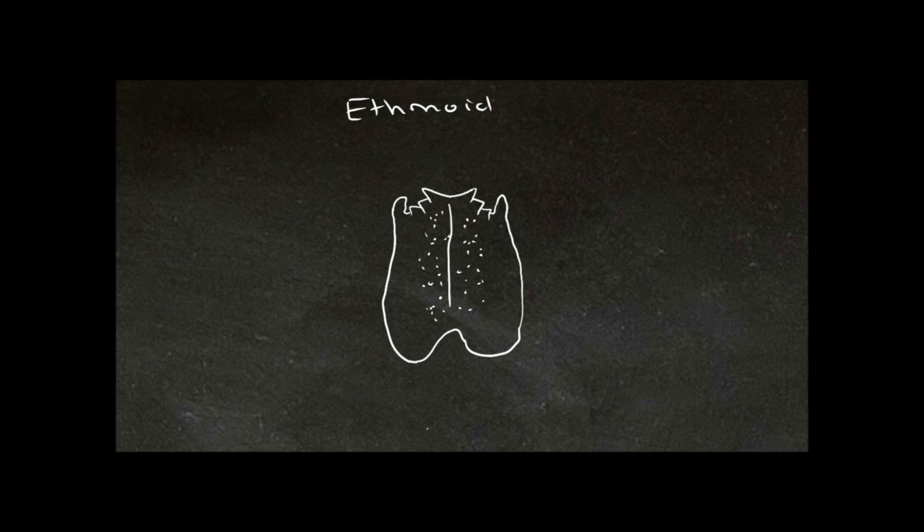Now we are looking at the superior aspect of the ethmoid bone. Here in the midline is the Crista Galli. Lateral to the Crista Galli is this perforated portion of bone, which allows the transmission of the olfactory epithelial cells. We refer to this as the cribriform plate. These cells make contact with the olfactory bulbs, which lie on top of the cribriform plate.